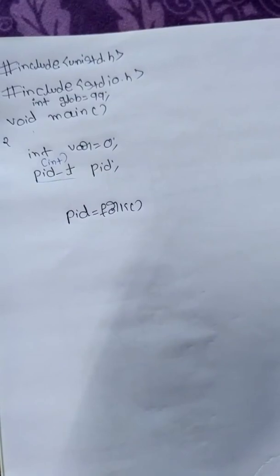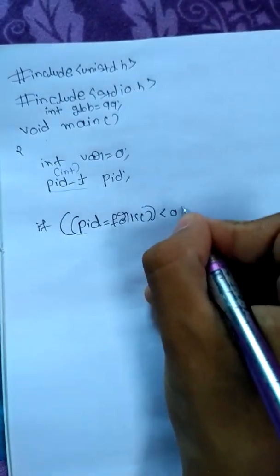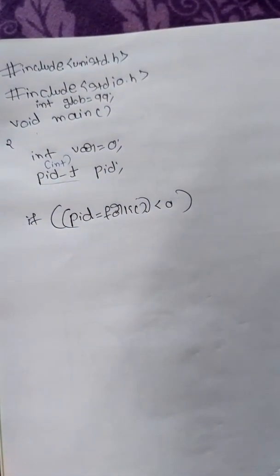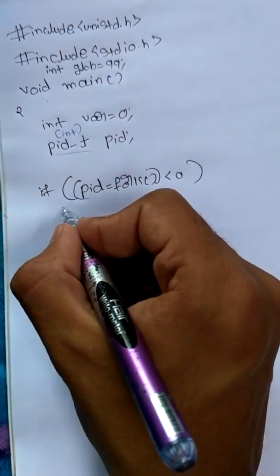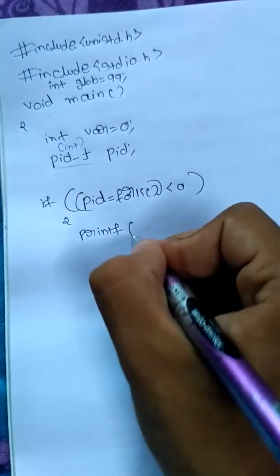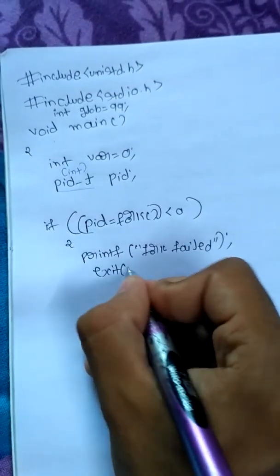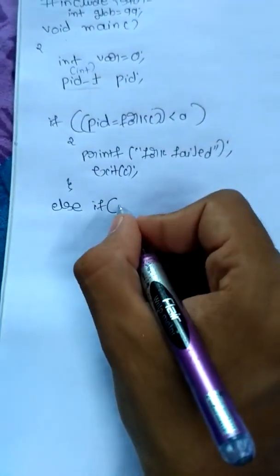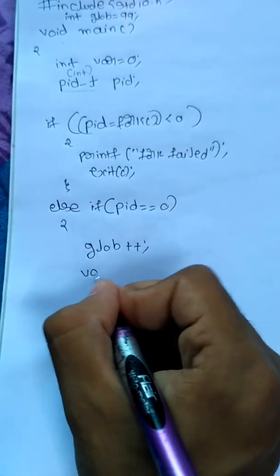I am going to check if fork returns a value less than 0. If the fork system call fails, fork returns a value less than 0. I will explain later why it fails and under what conditions. For now, I say: printf("fork failed"); and then exit(0) since I don't want to continue. Next I write: else if (pid == 0) — meaning we are in the child process — then I say globe++ and lvar++.